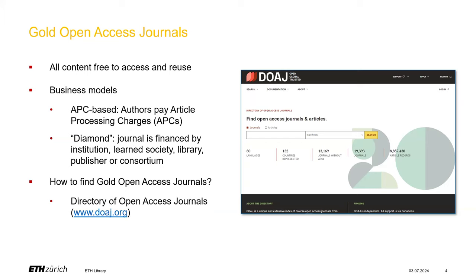There are also gold open access journals that do not charge APCs — these are called diamond open access journals. They are funded by institutions, learned societies, libraries, publishers, or consortia of such organizations. If you want to find an open access journal in your discipline, or simply check if a certain journal is a gold open access journal, we recommend using the Directory of Open Access Journals, DOAJ, which is a comprehensive and quality-controlled database of gold open access journals.